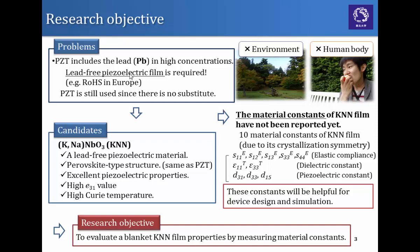One of the candidates to substitute PZT is potassium sodium niobate, called KNN. It is a lead-free piezoelectric material and it also has a perovskite-type structure, same as PZT, and it has excellent piezoelectric properties.